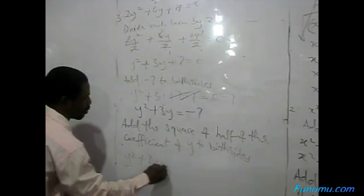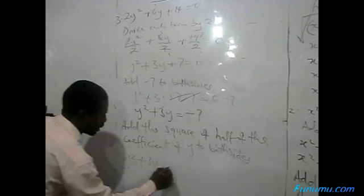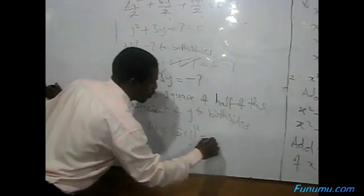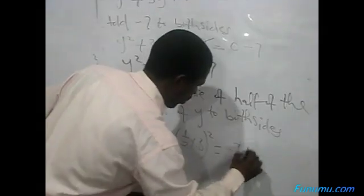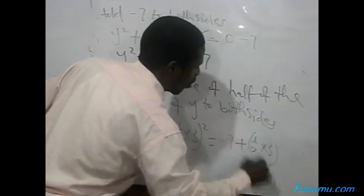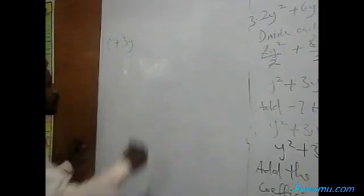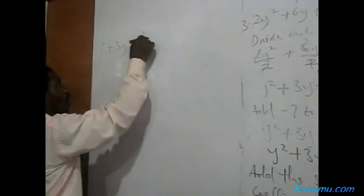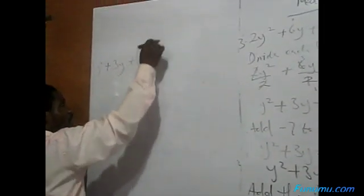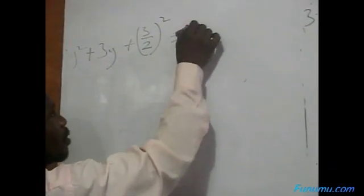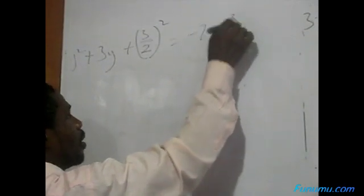Plus 3Y — the coefficient of Y is 3. So we add half times 3 squared to both sides: Y squared plus 3Y plus (3/2) squared equals minus M plus (3/2) squared. That is, half times 3 is 3 over 2, which gives minus 7 plus (3/2) squared.